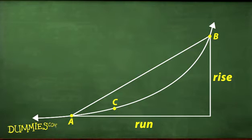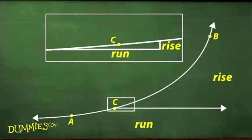What do you do if you want the exact slope at, say, point C? Zoom in. When you zoom in far enough, infinitely far, the little piece of the curve becomes straight, and you can figure the slope the old-fashioned way.